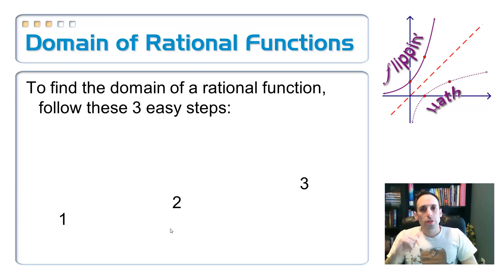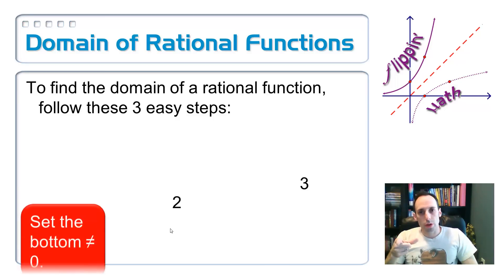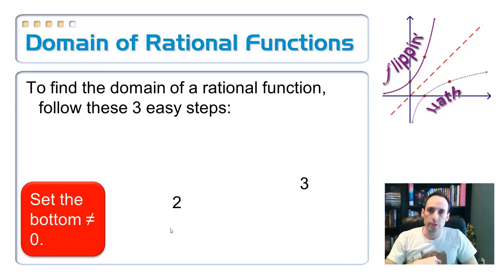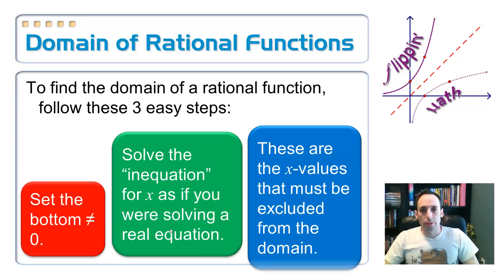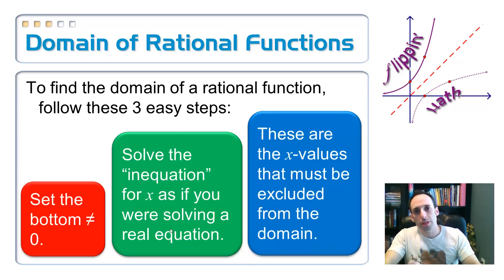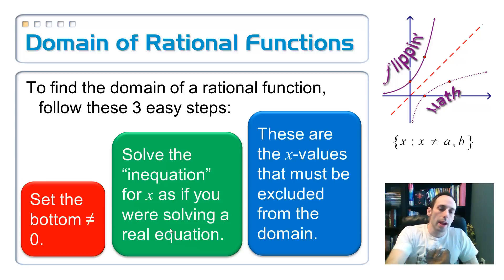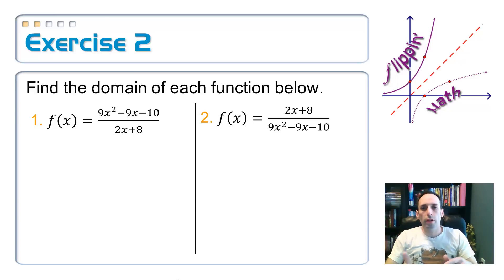So to find the domain of a rational function, three easy steps. Step number one, set the bottom not equal to zero. Step number two, solve that in-equation for x. It's not an equation, it's an inequality, whatever you want to call it. You solve it just like you were solving a regular equation. And then, finally, whatever x values you get, those are the ones that have to be taken out of the domain. It's all real numbers except for those numbers. And I might have something like that if I was writing it in set builder notation.